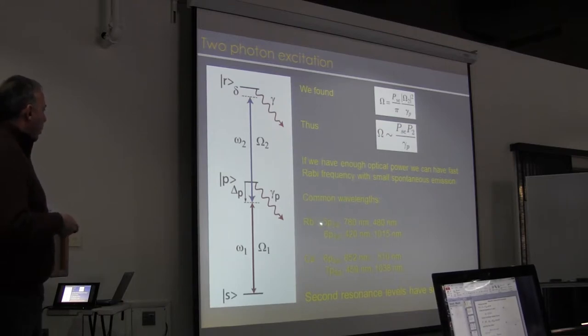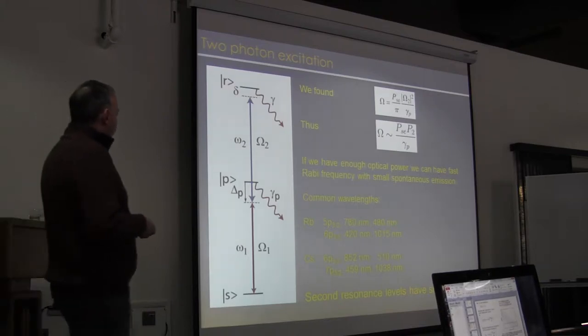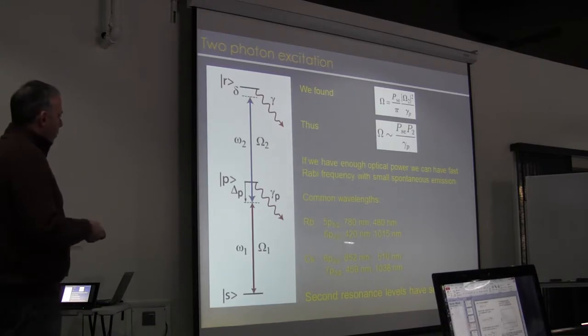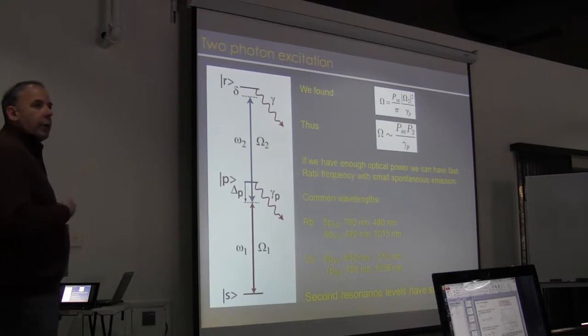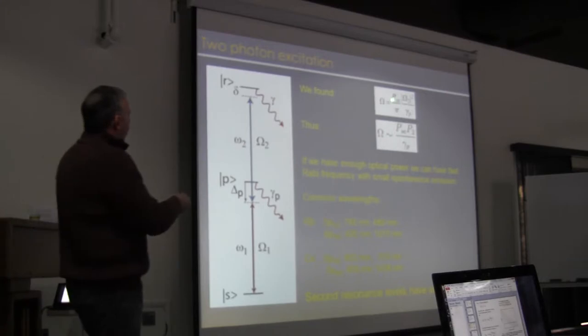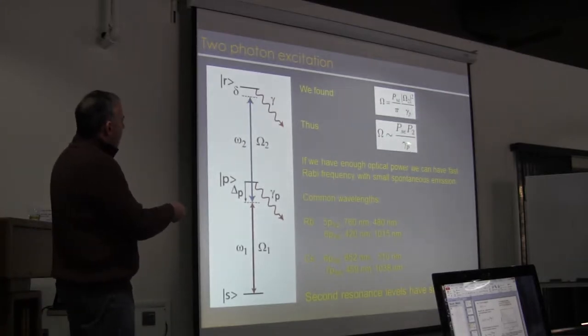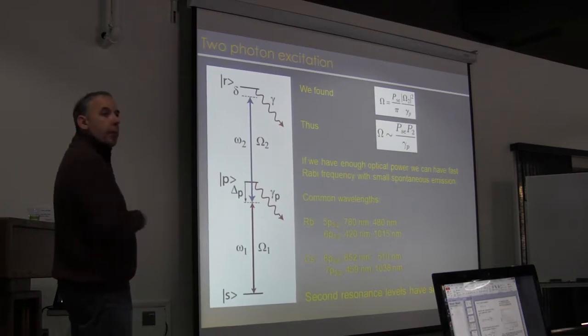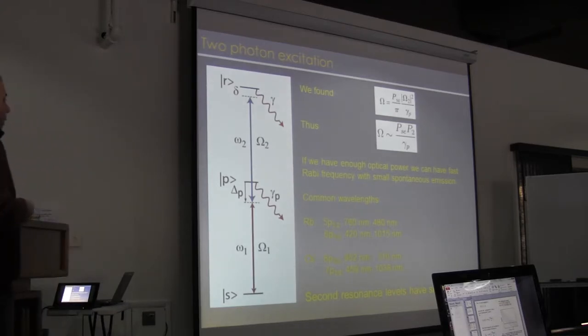Common wavelengths are well known for rubidium and cesium. If we take the first resonance level, the first photon is in the near-infrared, the second photon is in the blue. If we go through the second resonance line, then the first photon is in the blue and the second photon is in the near-infrared. This can be advantageous for getting fast excitation, just because if I go to the second resonance level, the linewidth is smaller. The lifetime is longer at that state, and so if I make this linewidth smaller, I get a stronger Rabi frequency for the same spontaneous emission probability and the same power. So technically that can be advantageous.